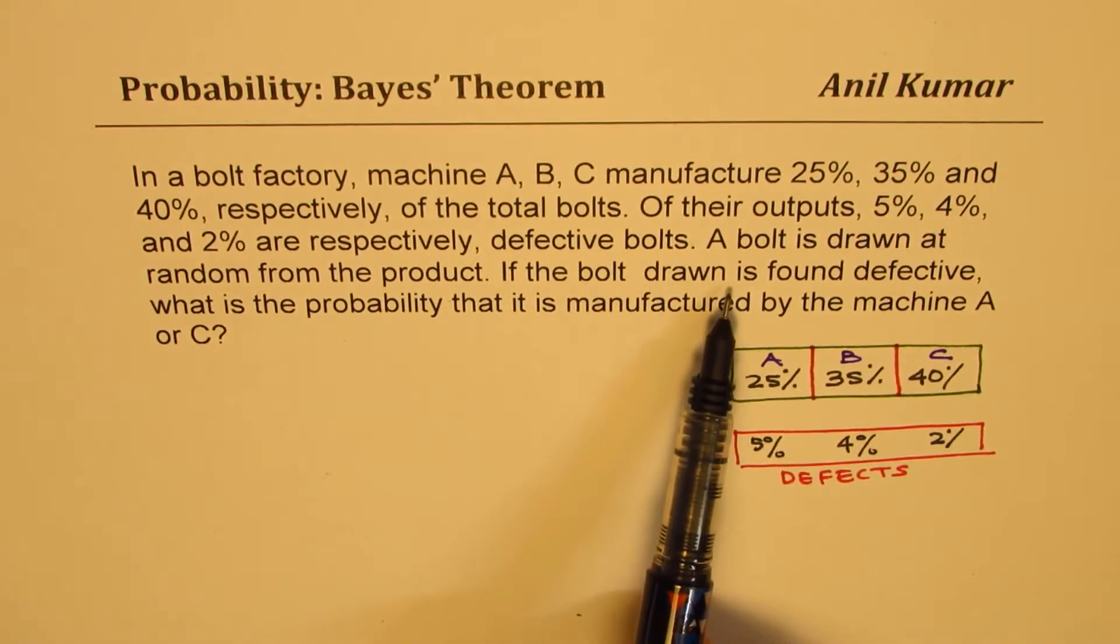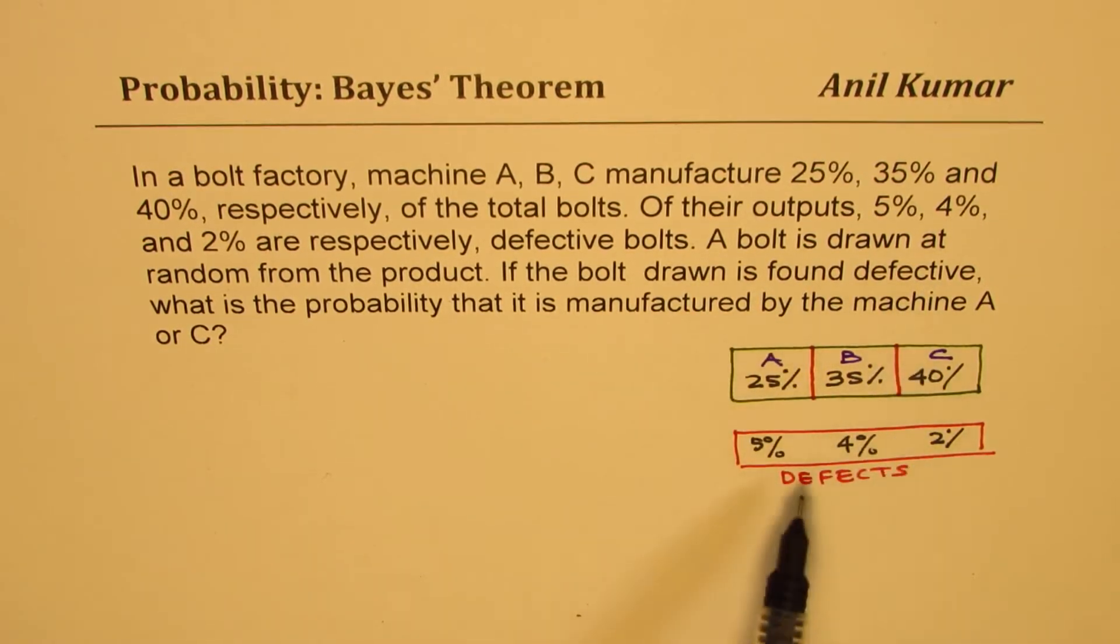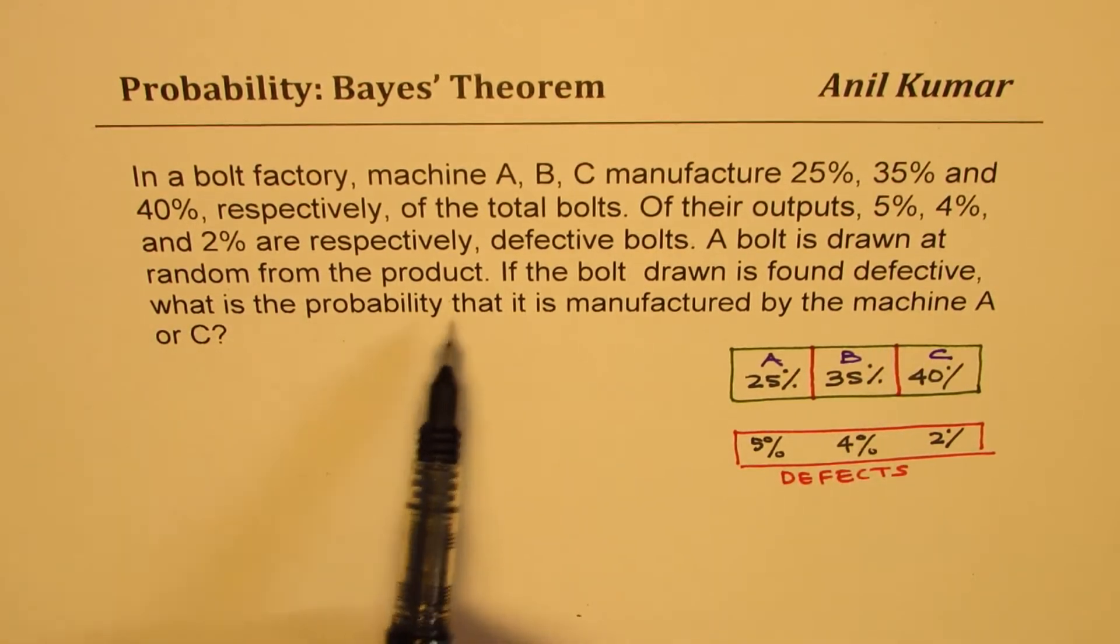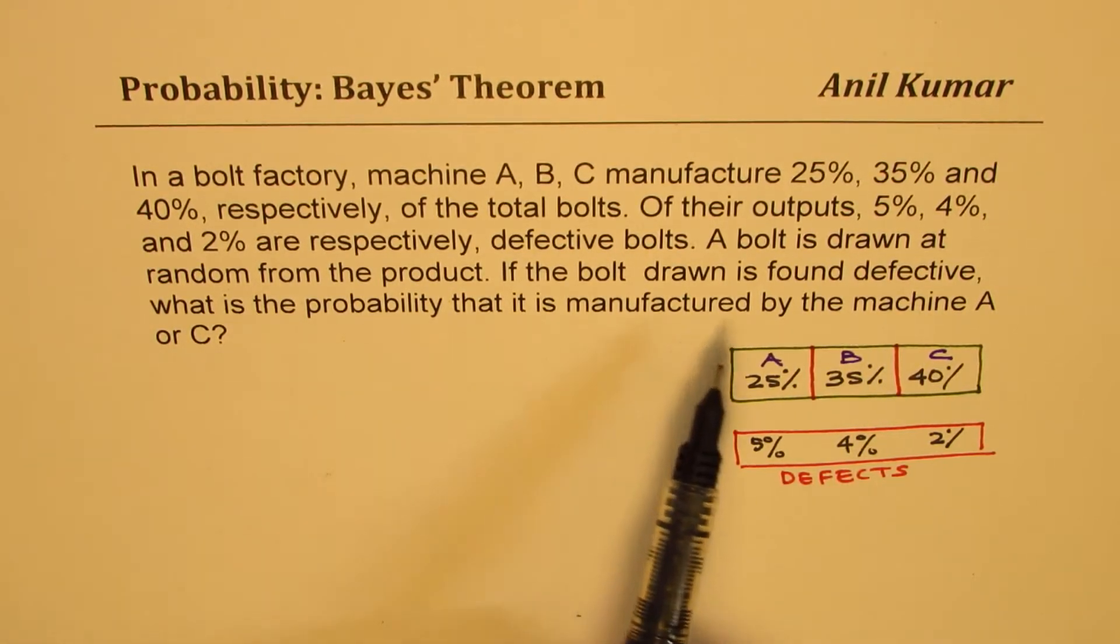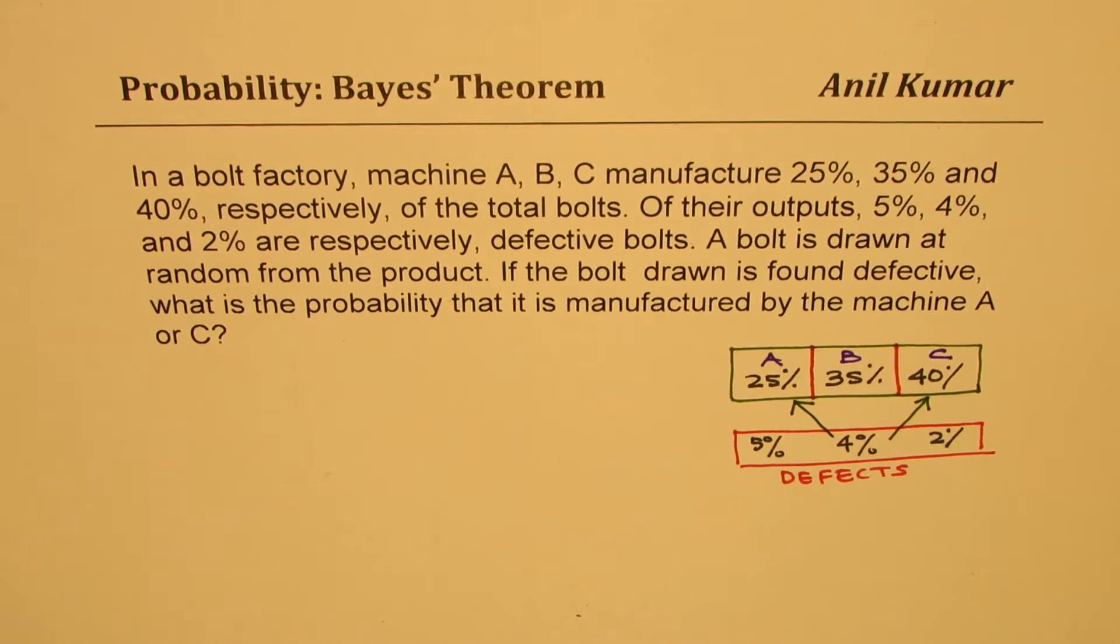Now the question is, if the bolt is drawn and found defective, that means one of these has been drawn. What is the probability that it is manufactured by machine A or C? We have drawn something and we want to find the probability that it came from either one of these two, not from B. Some of you could also work probability from B and then complement. That will also give you the right answer.